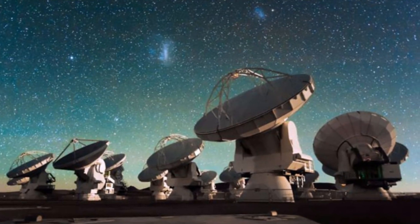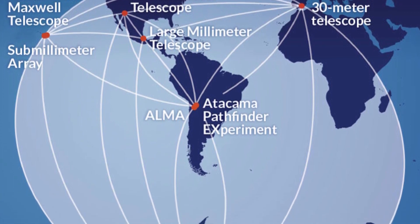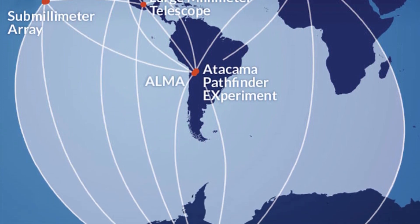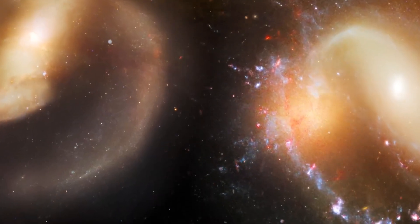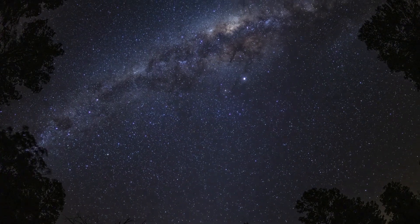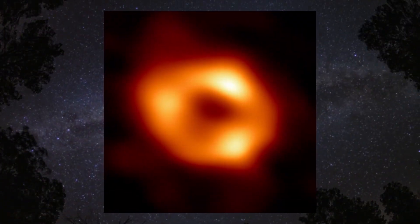The team used eight radio telescopes spread across the globe to collect data on the black hole for five nights in 2017, and that wasn't at all an easy task for them. Again, black holes are hard to identify. Even then, it took them five years to come up with an image for the rest of the world to see.